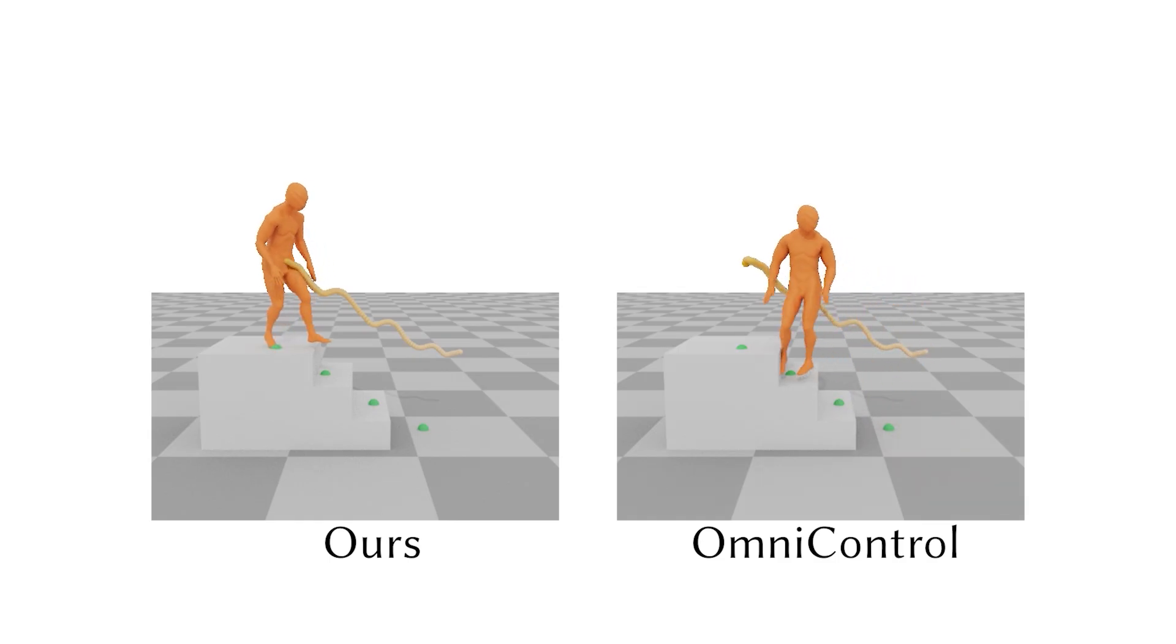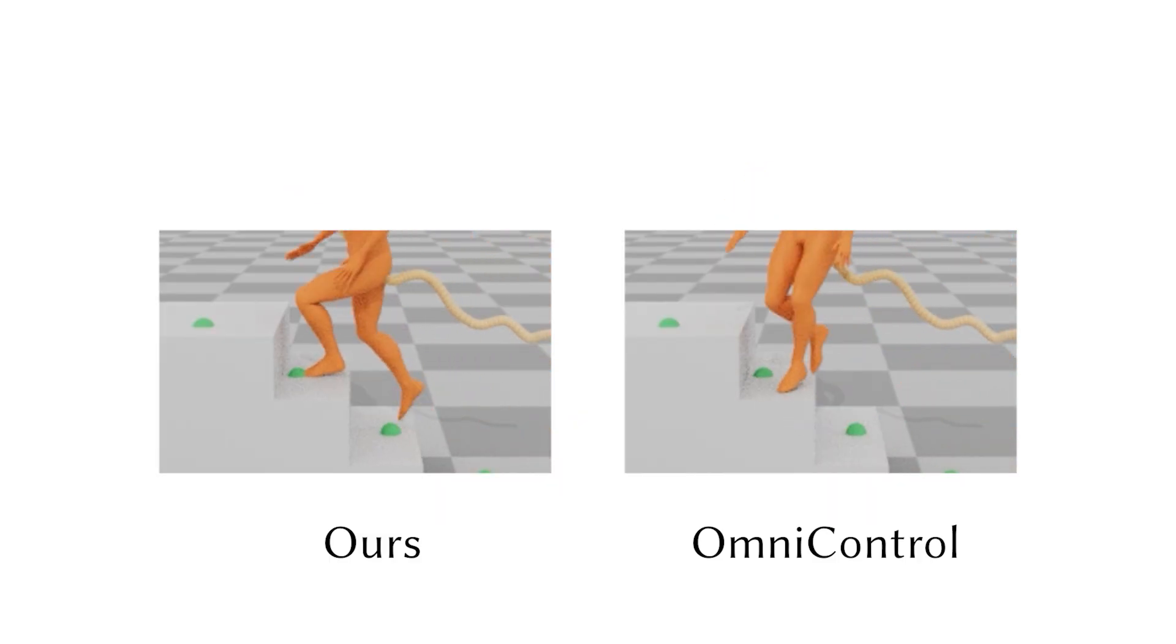In contrast, Omni-Control follows the trajectory control but neglects the sparse control signals on the stairs, resulting in missed steps.